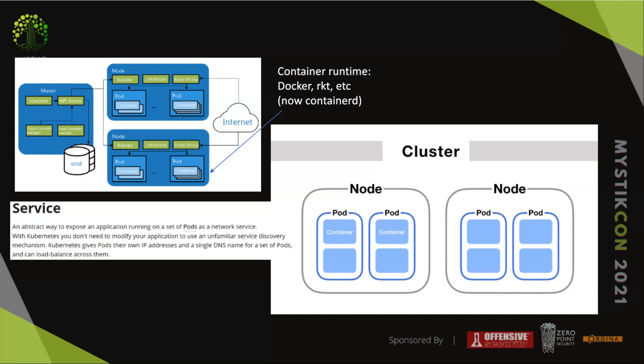The API server is like the heart of the Kubernetes environment — it talks to almost everything and almost everything talks to it. It has an API, and it's one of the things to be aware of if you want to harden your environment. The cloud controller manager is optional in case you're running your cluster on the cloud, such as Google Kubernetes Engine or AWS.